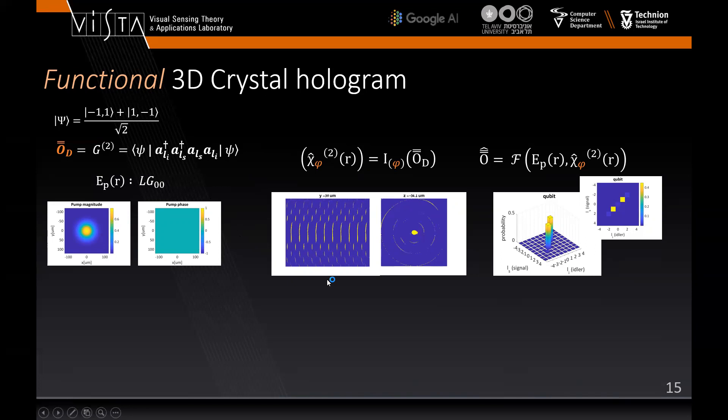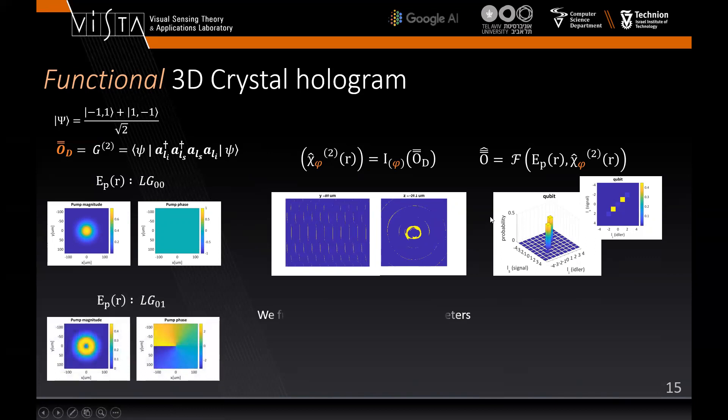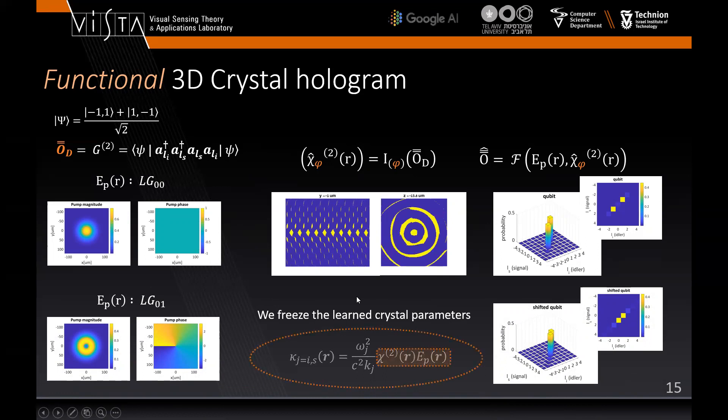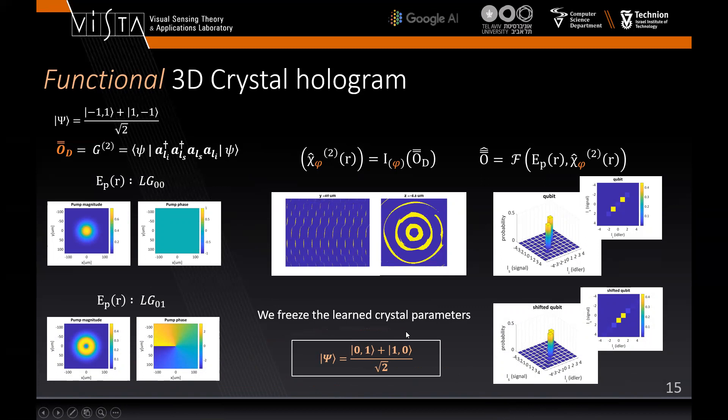We now learn the 3D crystal hologram to produce bell pairs with signal and idler photons carrying equal units of orbital angular momentum with opposite signs. At learning, we take the pump to be Gaussian again and the results are in line with our expectations. Now we hold the crystal hologram and change the pump to Laguerre-Gauss 0,1. While changing the pump, momentum conservation will result in shifted correlation function as can be seen. So we get a functional crystal acting like a switch.